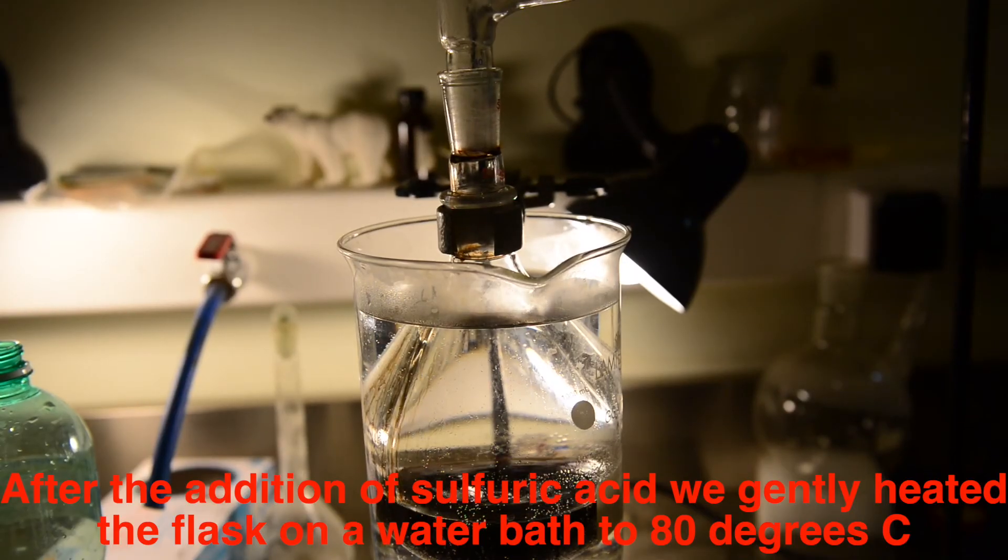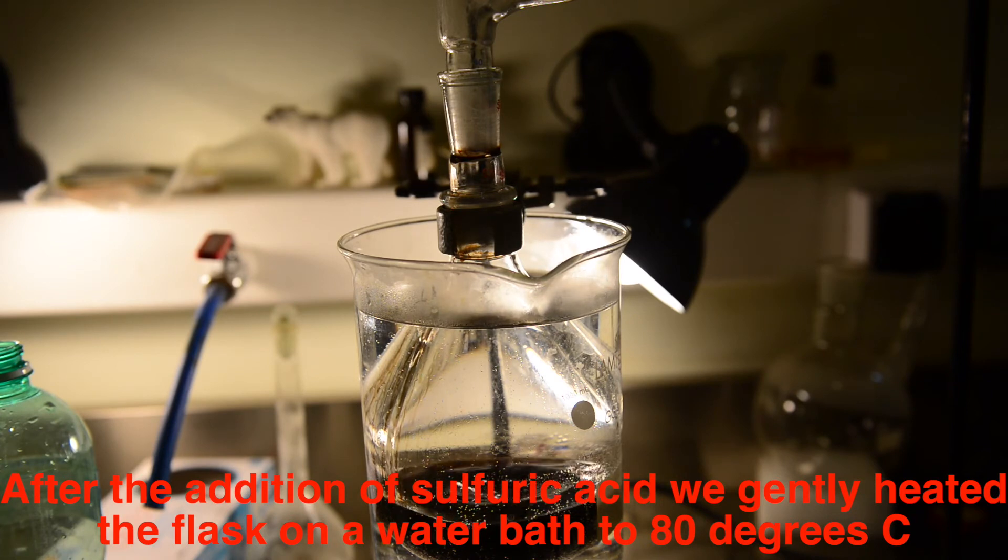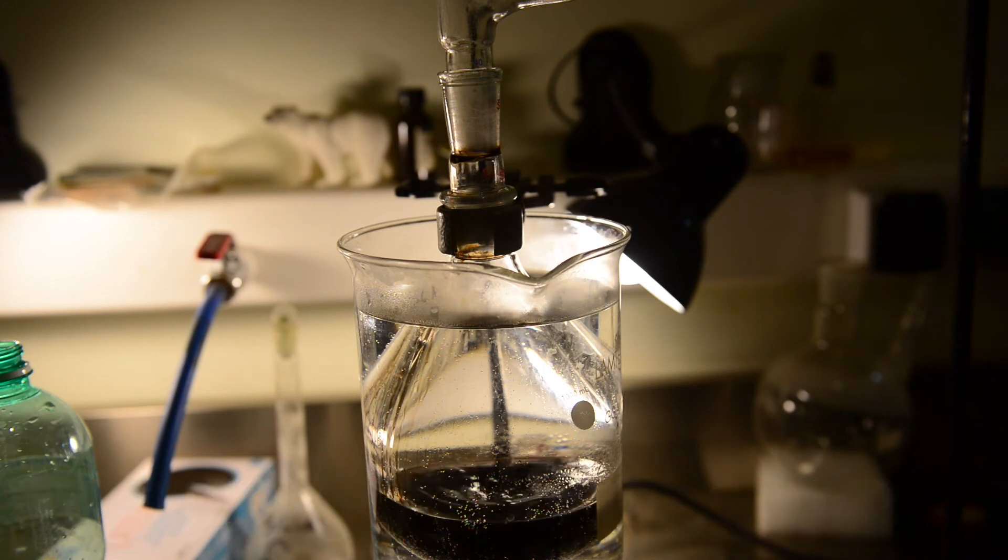That time, we were patient and had not had the flask heated until we added all the sulfuric acid. 70-80 degrees was enough for the reflux to start in the flask and the distillate began to come over.